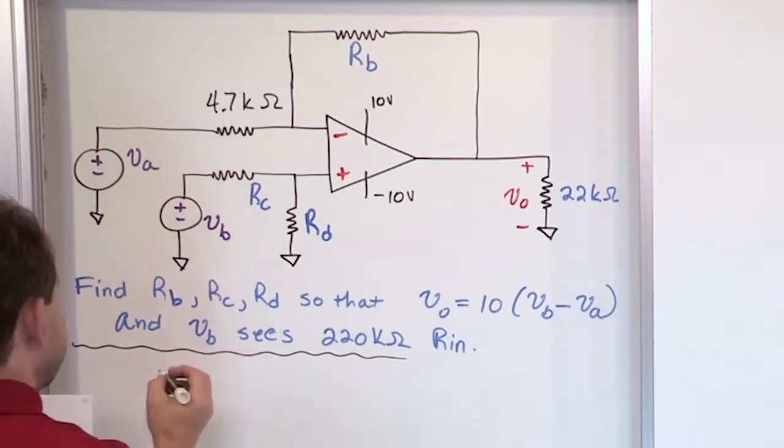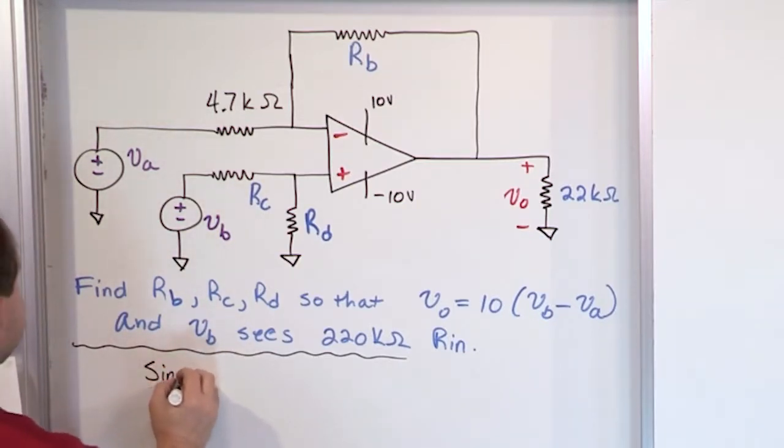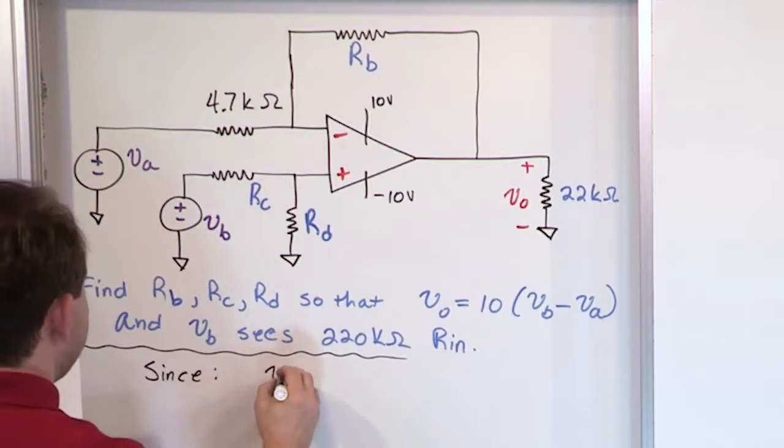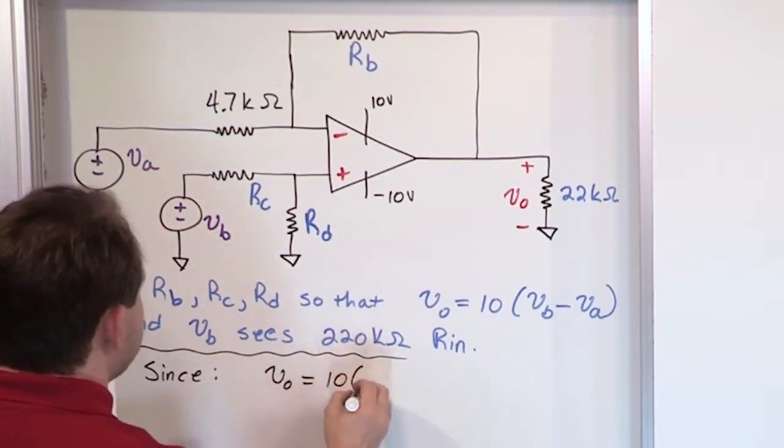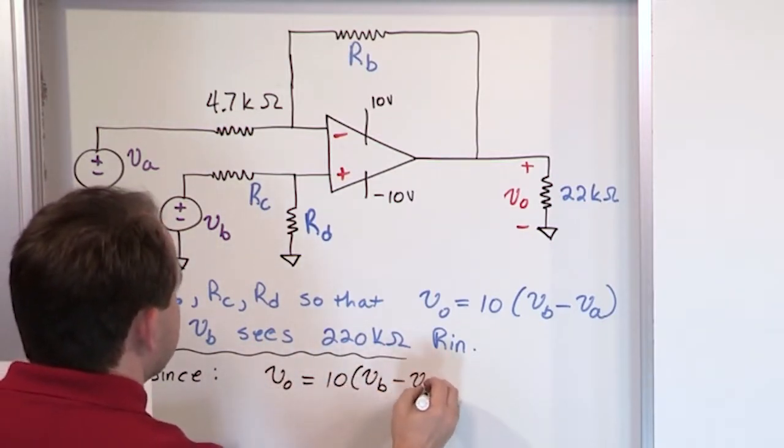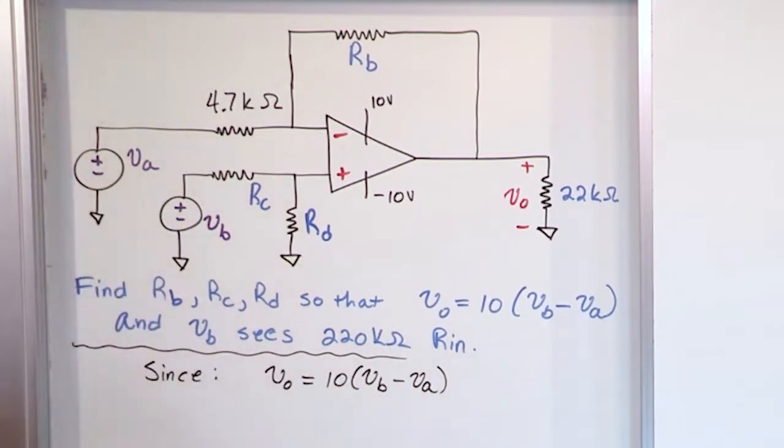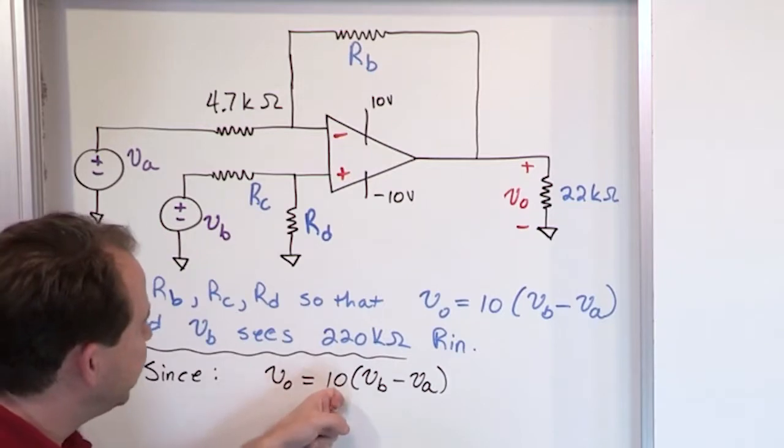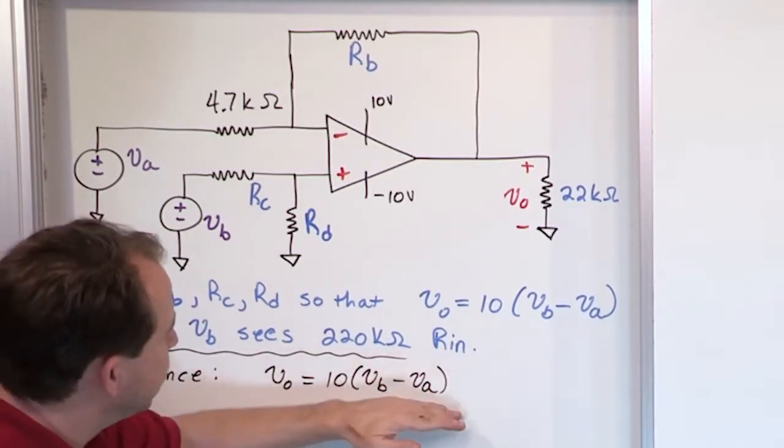So let me just kind of write it down like this. Since we know the following, since we know that the output voltage is equal to 10 times VB minus VA, first of all, what does this tell you about the problem? Okay, look at it carefully. Think about it.